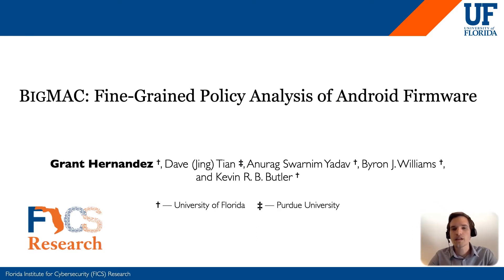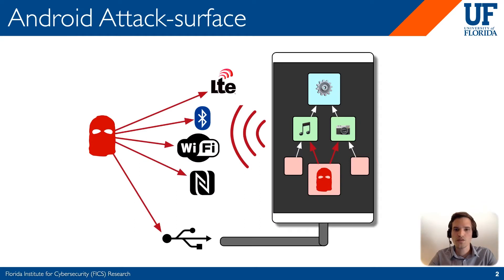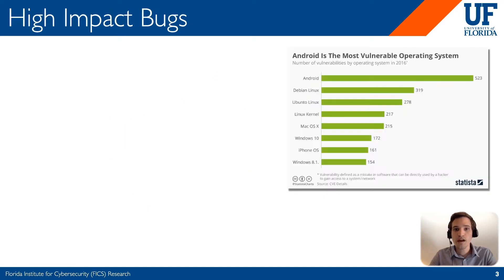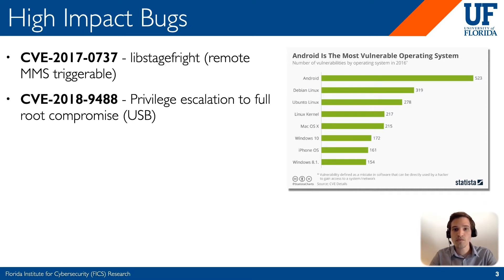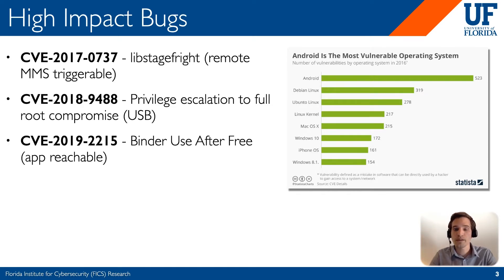The Android OS today has a lot of attack surface, whether it's via local applications, websites, over-the-air threats such as via Wi-Fi or Bluetooth, or even physical attacks via USB. There are a lot of avenues attackers can use to compromise the system. There have been plenty of high-impact bugs in the past, one of which was libstagefright, which is a remotely triggerable MMS message, a USB privilege escalation, and even a binder use-after-free vulnerability, which was triggerable from a local application.